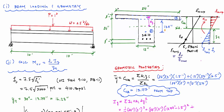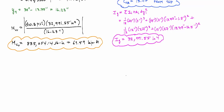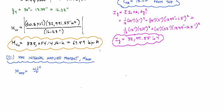Now we compare the cracking moment to the maximum internal applied moment from the loading. Since the loading is symmetric, the maximum moment occurs at mid-span. The applied moment is M_applied = wL²/8 + PL/4, combining the contribution from the distributed load and the concentrated mid-span load. Plugging in the values gives M_applied = 30 kip-ft.